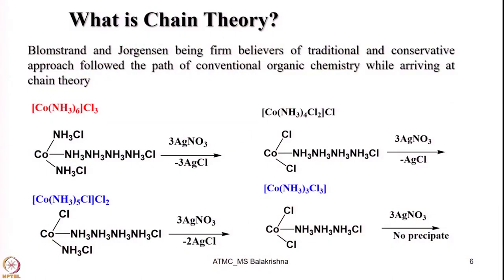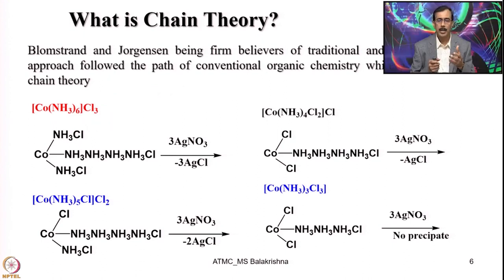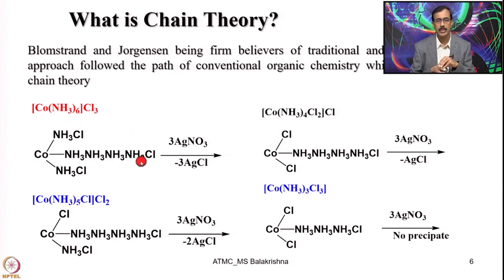Blomstrand and Jorgensen were firm believers of the traditional and conservative approach and followed the path of conventional organic chemistry while arriving at their theory. When they made hexamine cobalt(3) chloride, they believed that a transition metal can have a valency of 3, not beyond that. In order to satisfy valency 3, they wrote a structure for hexamine cobalt(3) chloride, and then reacted it with silver nitrate, anticipating the precipitation of 3 silver chlorides.